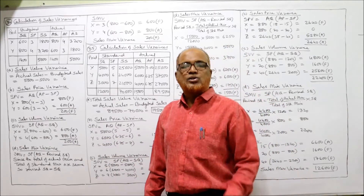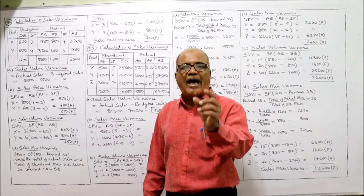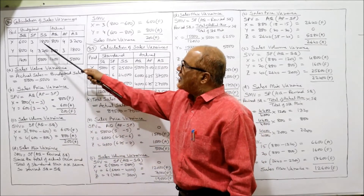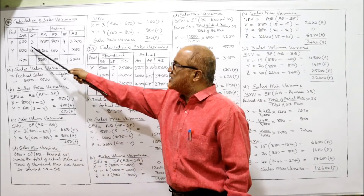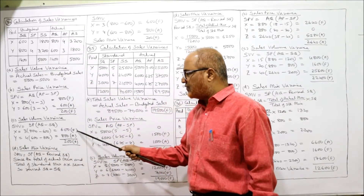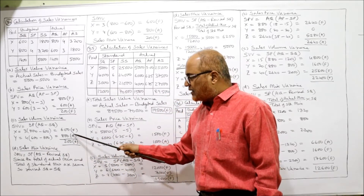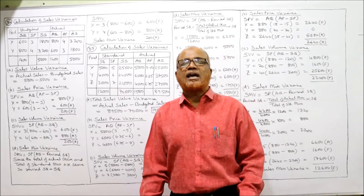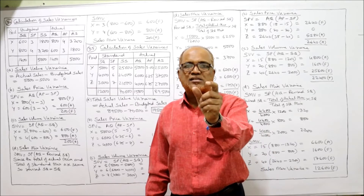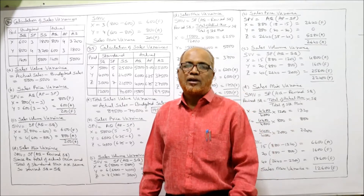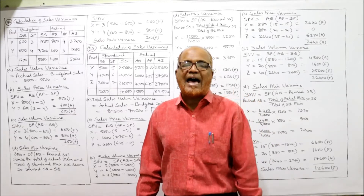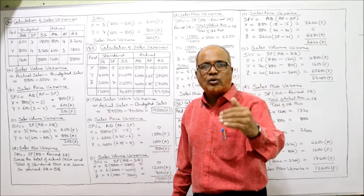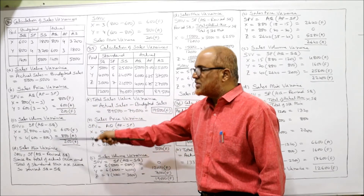Sales volume variance equals standard price into (actual quantity minus standard quantity). Standard prices are 3 and 4; actual quantities are 800 and 600; standard quantities are 600 and 800. So: 800 minus 600 into 3 equals 600 favorable; 600 minus 800 into 4 equals 800 adverse. Set off: 800 adverse minus 600 favorable gives 200 adverse. We can verify: sales value variance equals sales price variance plus sales volume variance. 200 favorable plus 200 adverse cancels to 0. Sales value variance is 0 — calculations are correct.